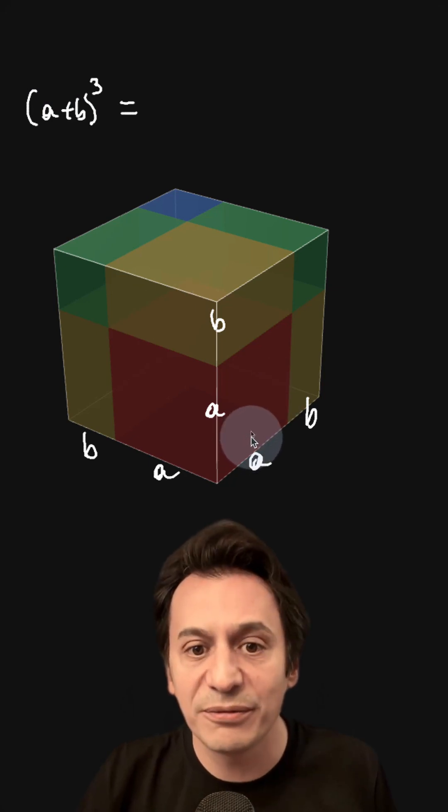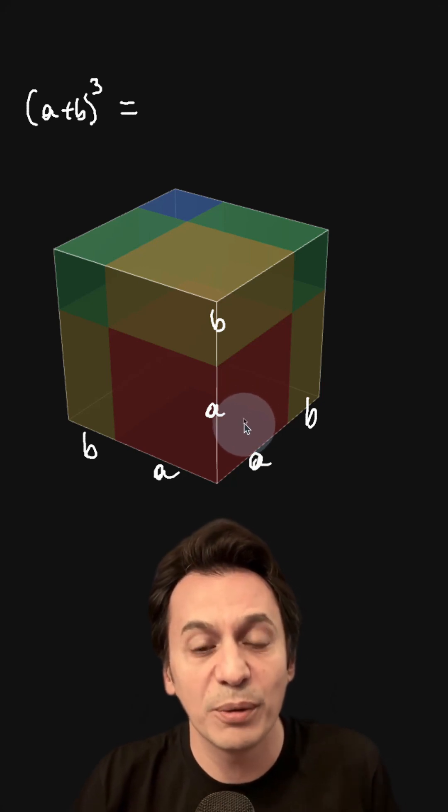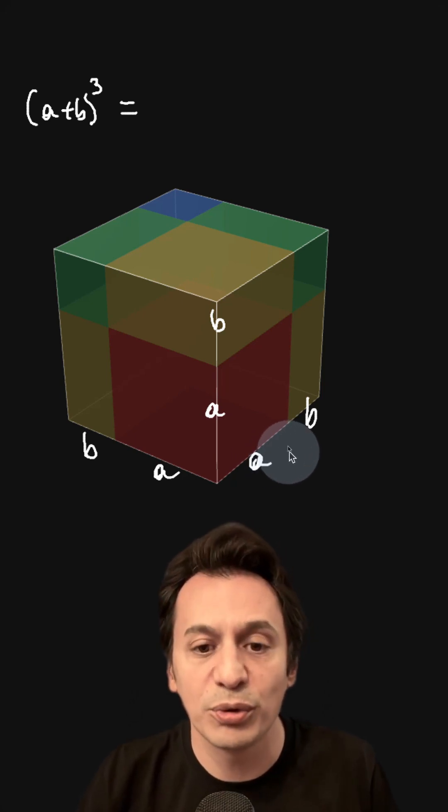I can also find this in a different way. I can calculate the volumes of the small pieces that make up the cube one by one, and when I add them up, I get the total volume. That's exactly what we're going to do.